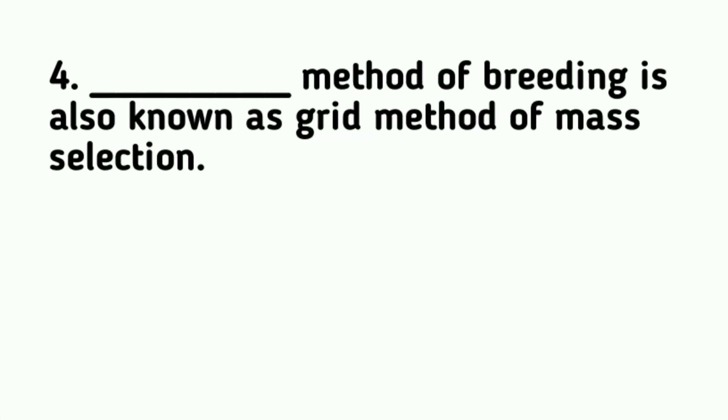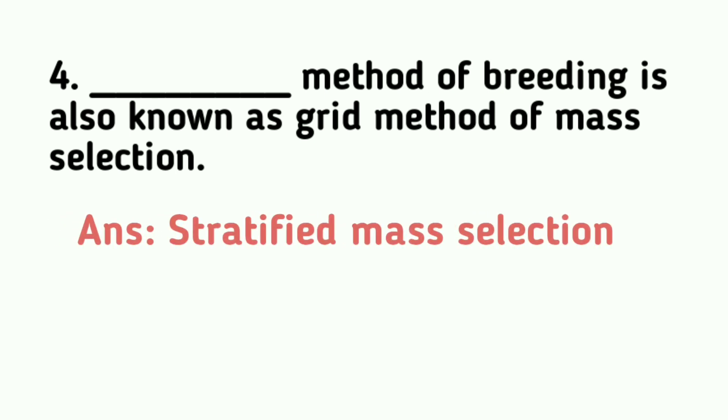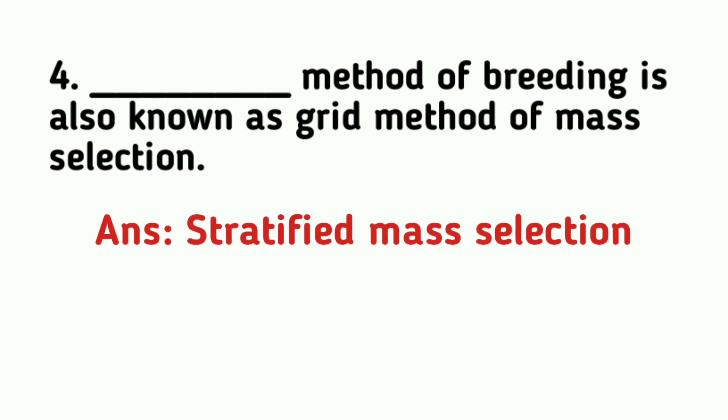The DAS method of breeding is also known as the Grid method of mass selection, also referred to as Stratified Mass Selection.